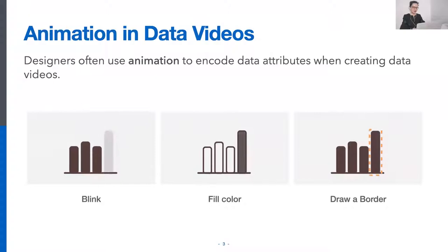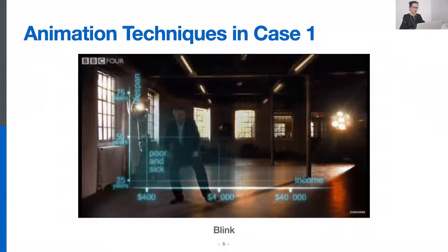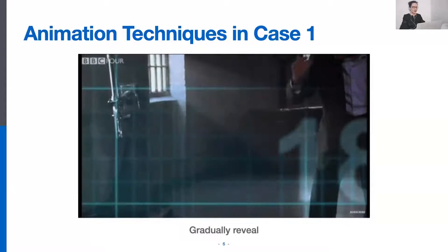For example, this data video is well known for incorporating animation into visualization to engage the audience. In the video, the author first decodes a scatter plot by presenting its two dimensions — income as x-axis and lifespan as y-axis. The axes blink to grab the audience's attention, and a set of bubbles representing different countries gradually reveal.